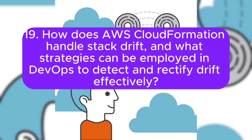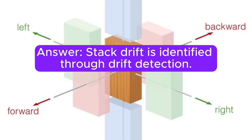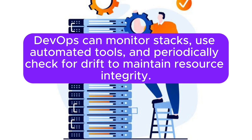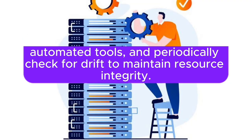Question 19: How does AWS CloudFormation handle stack drift, and what strategies can be employed in DevOps to detect and rectify drift effectively? Answer: Stack drift is identified through drift detection. DevOps can monitor stacks, use automated tools, and periodically check for drift to maintain resource integrity.